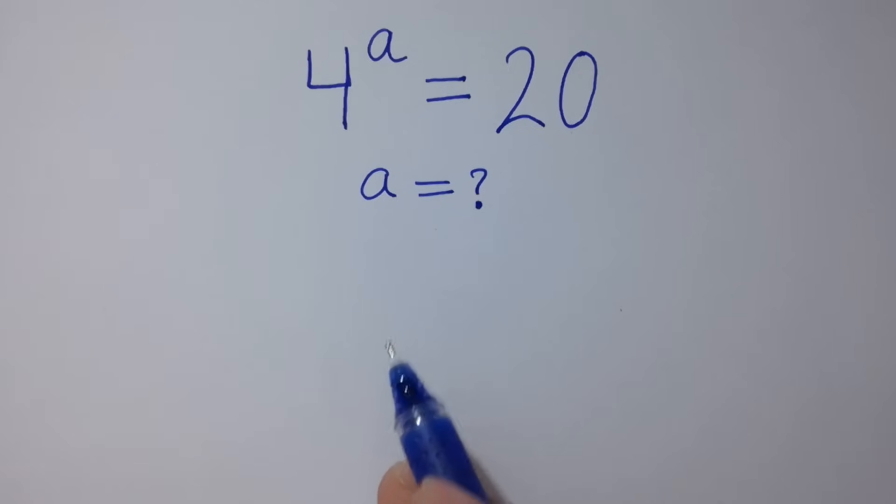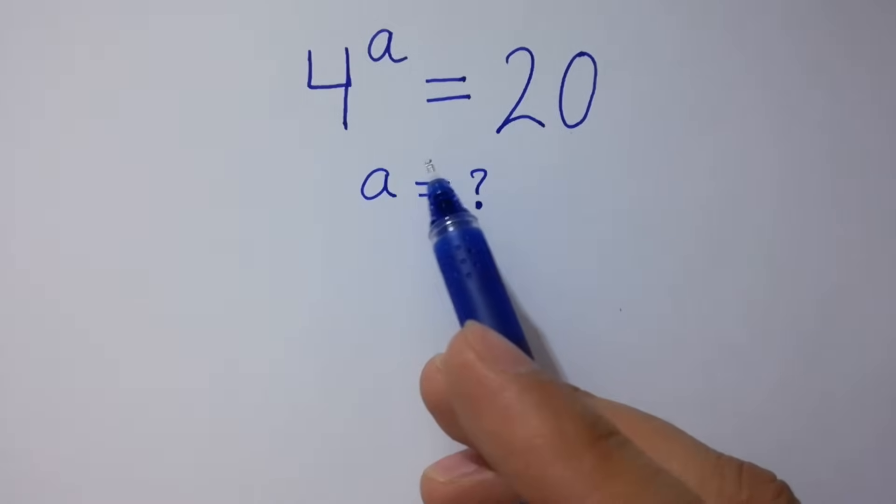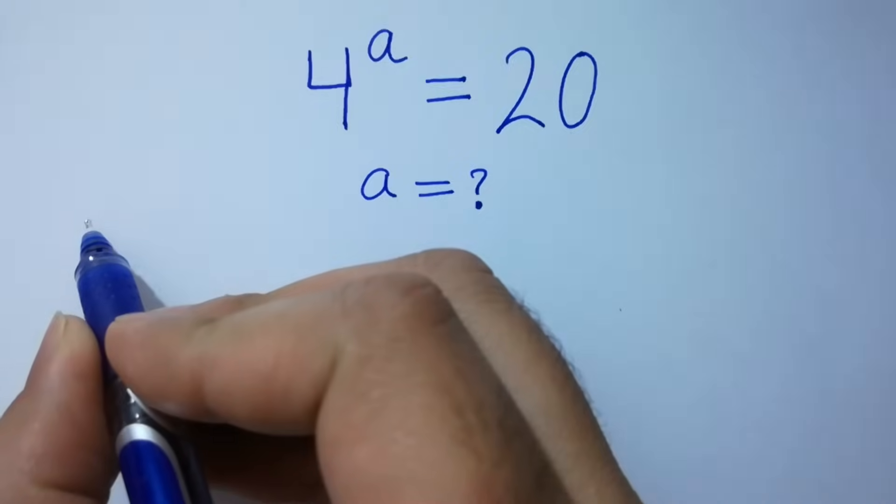Hello friends, find the value of a if 4 to the power a equals 20. Let's have a solution.